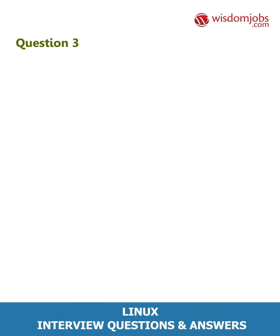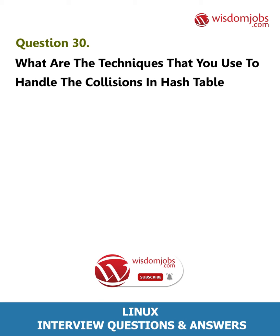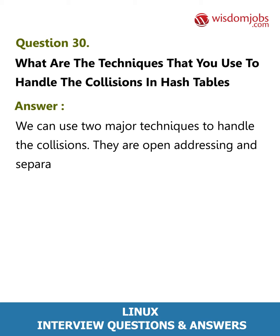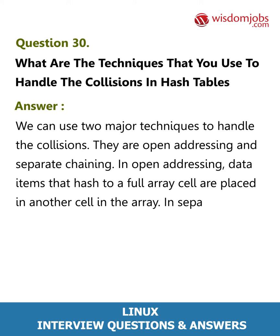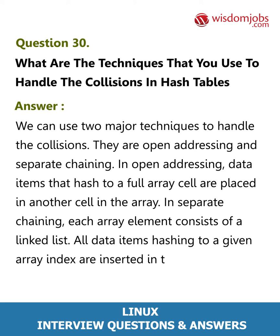Question 30: What are the techniques used to handle collisions in hash tables? Answer: There are two major techniques — open addressing and separate chaining. In open addressing, data items that hash to a full array cell are placed in another cell in the array. In separate chaining, each array element consists of a linked list, and all data items hashing to a given array index are inserted in that list.